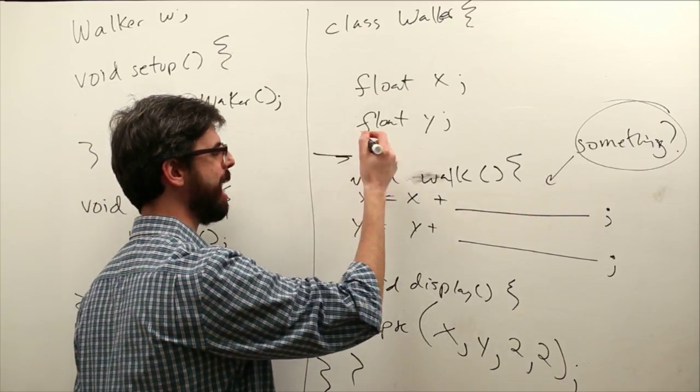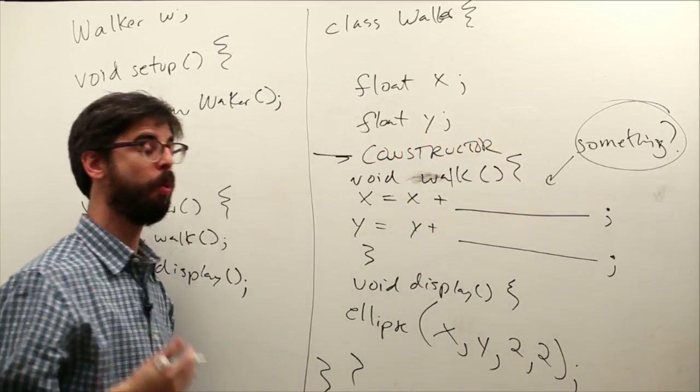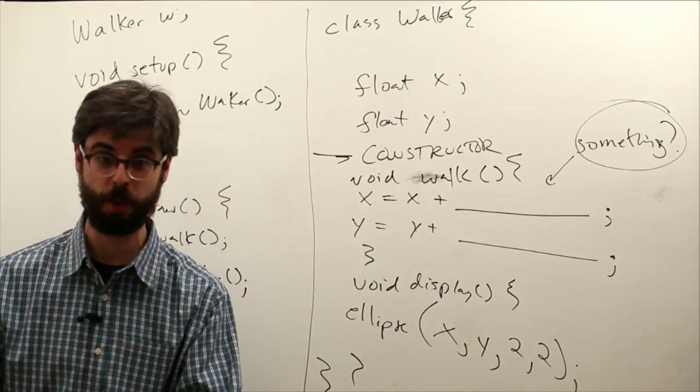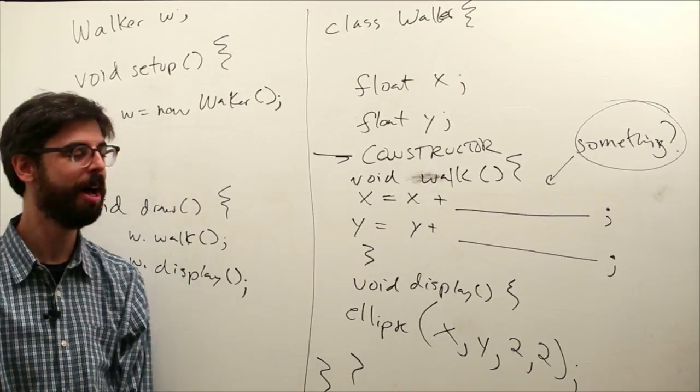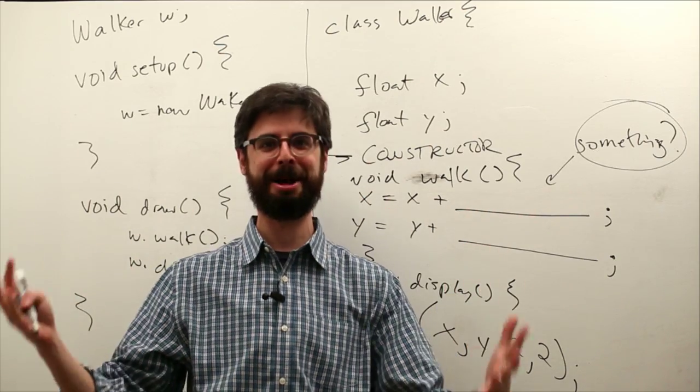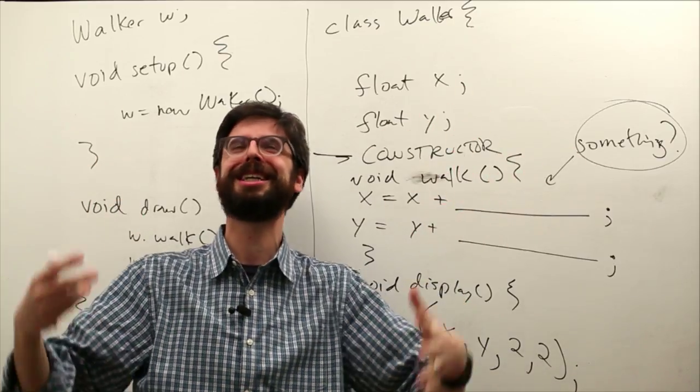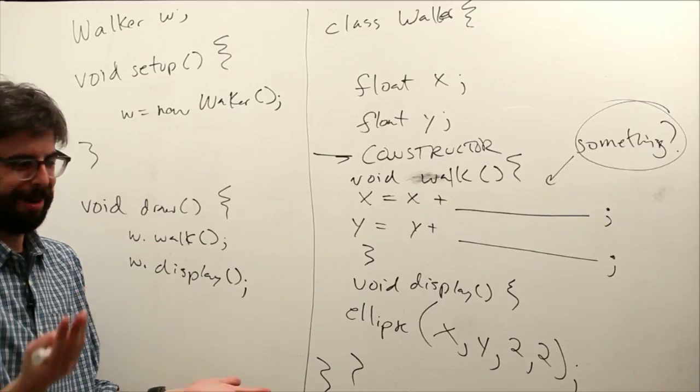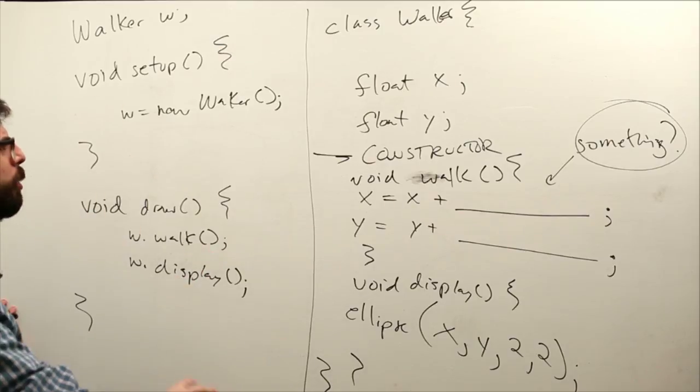We forgot that here we need to have a constructor. The constructor is the object's method that constructs the object, where all of its... It's kind of like the object's setup, in a way. Processing has a setup, which is where you do all the stuff that happens at the beginning of the Processing sketch. An object's constructor is its own setup. It's all the stuff that happens when you first make that object. This is the structure we want to get used to.